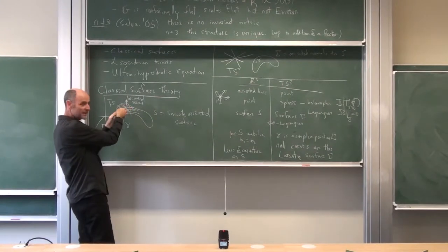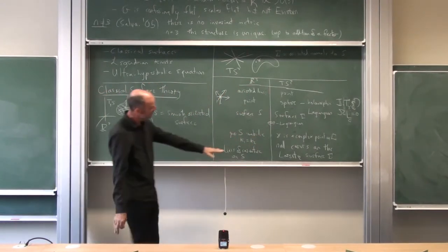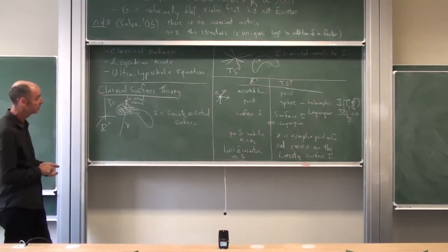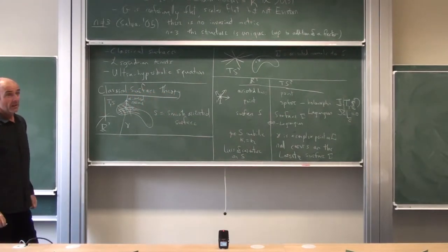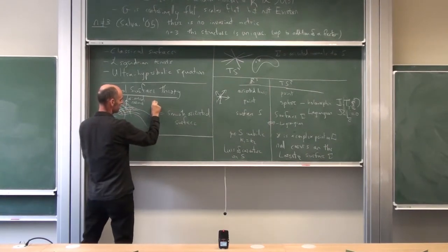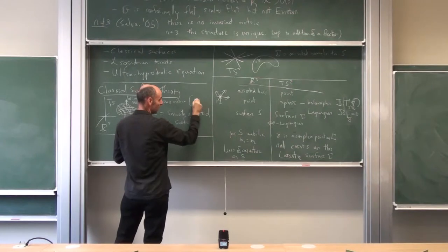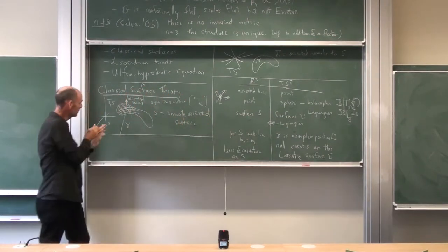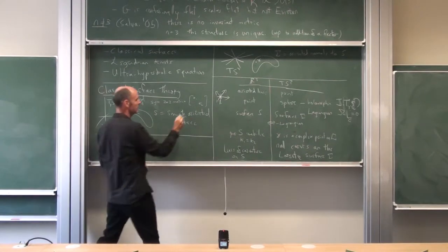The lines of curvature on S are the null curves on the Lorentz surface in TS². The nullness of the metric in TS² gives you exactly the lines of curvature in R³ on the surface. The null directions in R³ are exactly the lines of curvature — the eigendirections of the second fundamental form, which is a symmetric 2×2 tensor. You diagonalize it, the eigenvalues are the principal curvatures, and the eigendirections integrated up give you the lines of curvature.